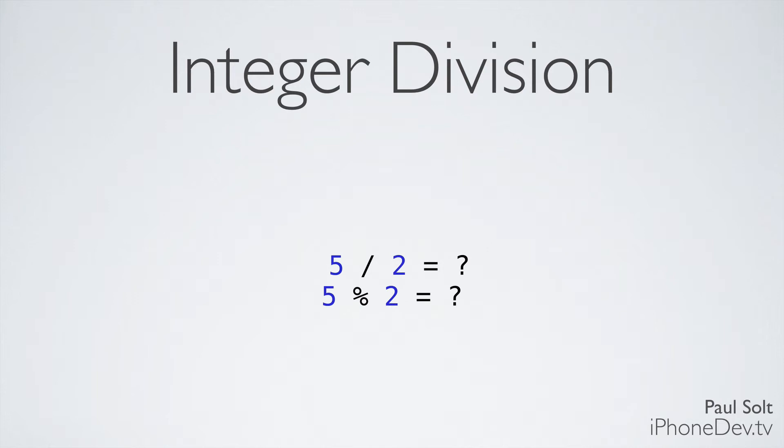Next up is integer division. This is a little bit different than some of the division you're used to. Normally when we say 5 divided by 2, it's going to be 2 and a half. But in this case, since we're only dealing with integers, we can't represent a decimal place. So a decimal place is chopped off. And 5 divided by 2 is really just 2. So we get rid of that 0.5.